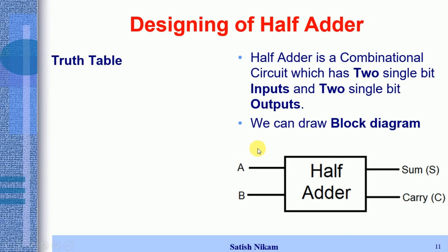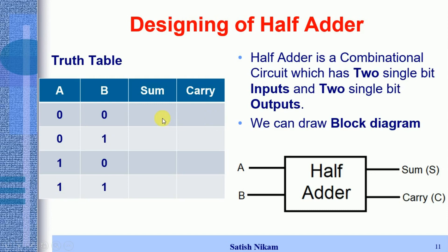Since we have two inputs, the maximum possible combinations of A and B are 2 raised to 2, which equals 4. So in the truth table we have four possible combinations: 0-0, 0-1, 1-0, and 1-1.